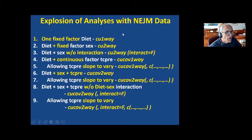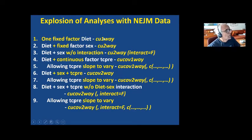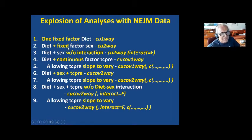What we have seen is that we took that one study — our New England Journal paper from 30 years ago — and saw that we could analyze some variable we're interested in in a variety of ways. We could take the change in cholesterol and look at it with one fixed factor, diet, or maybe diet and a second fixed factor, sex, and that could be done with interaction or without interaction.